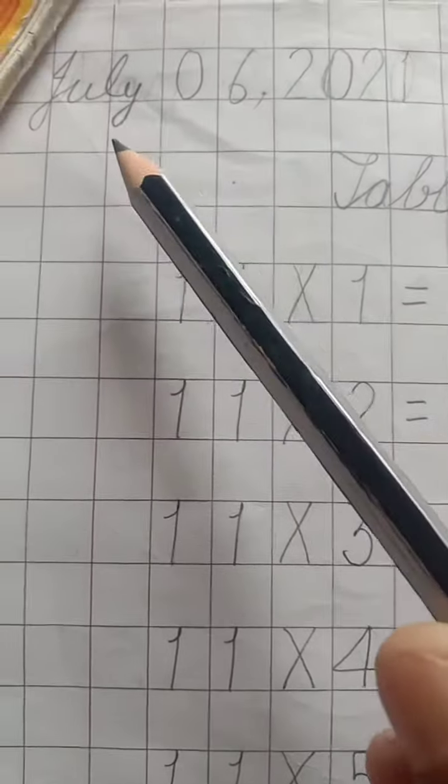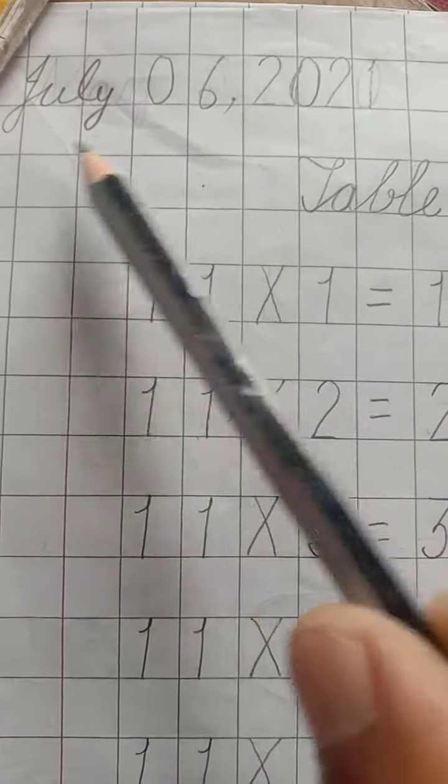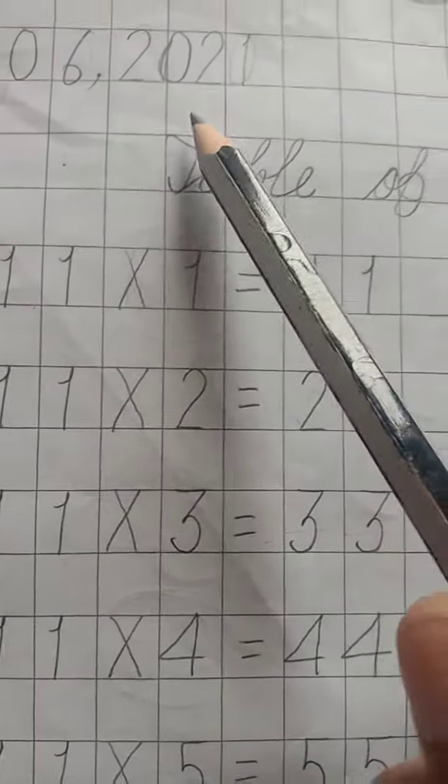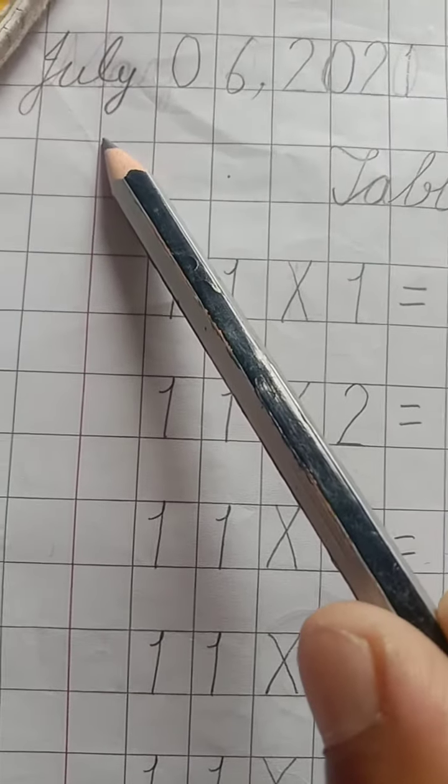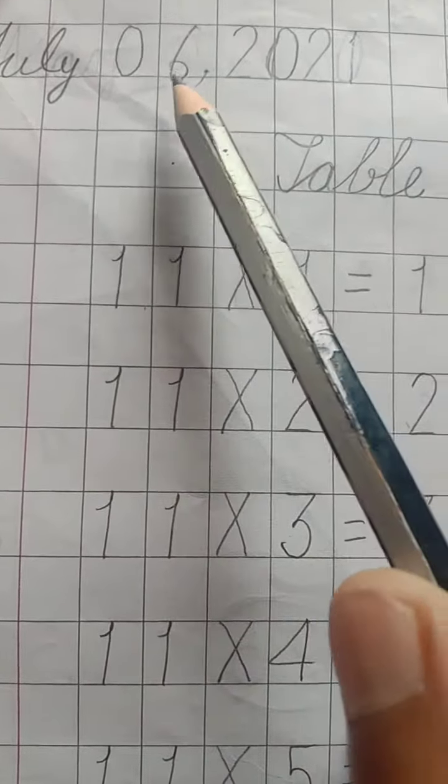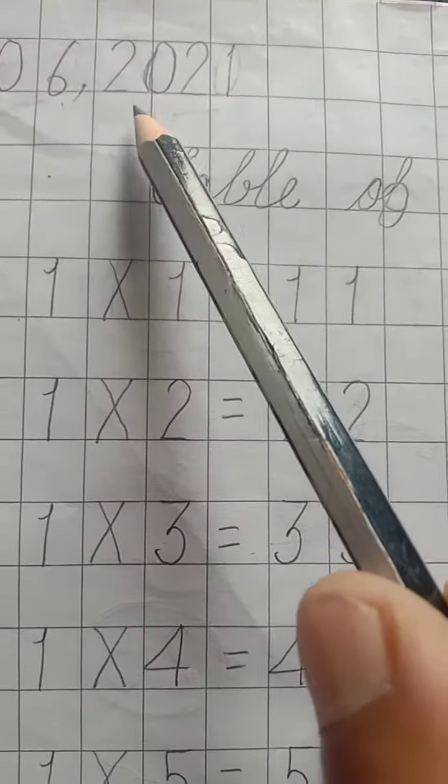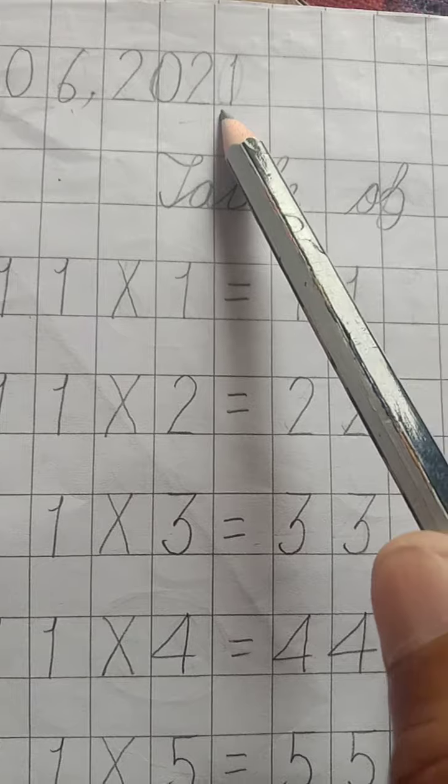Yes, first of all, arrange date and month. 06 date, okay? July 6, 2021. Which month is going on today? July month is going on and 06 date. Our date is 6, July 6, 2021. 2021 year is our year, okay?